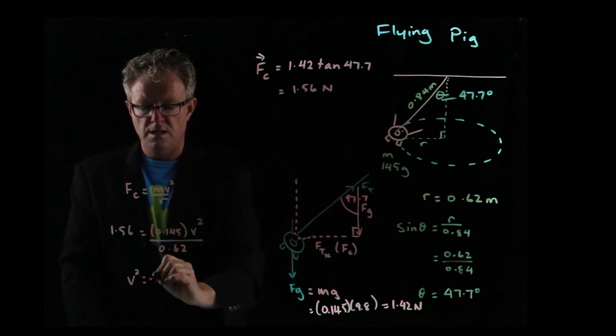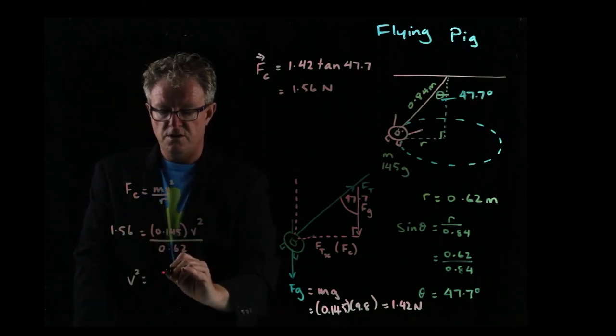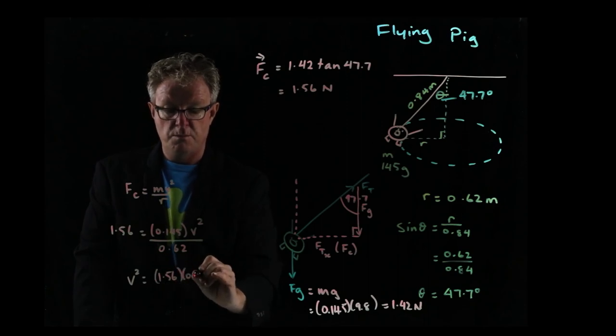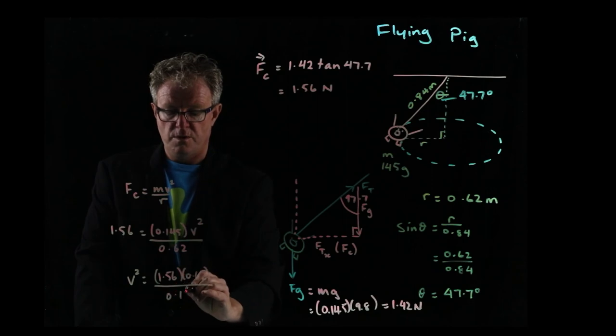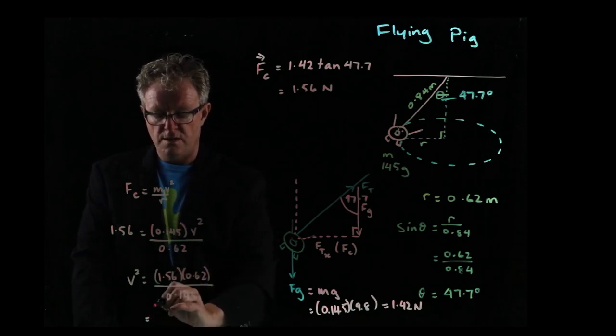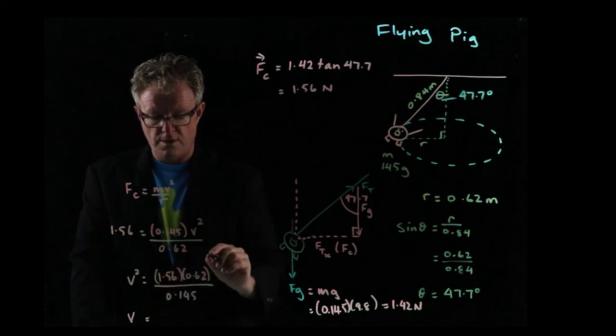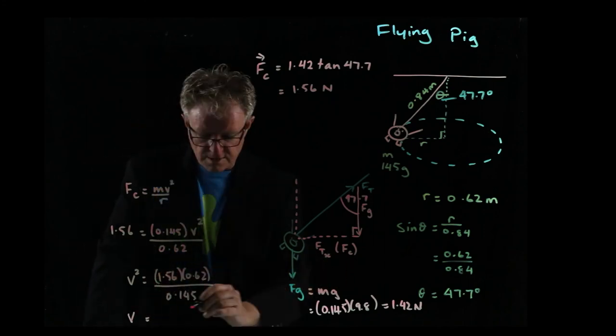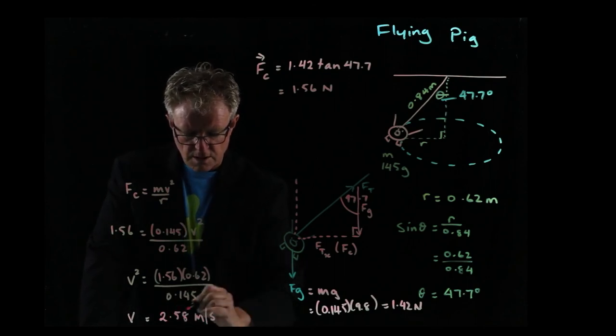So v² equals 1.56 times 0.62 divided by 0.145. Then we take the square root of that, and we end up with a final answer of 2.58 meters per second.